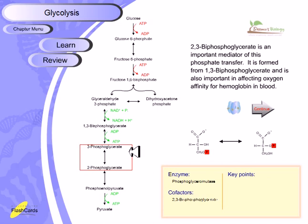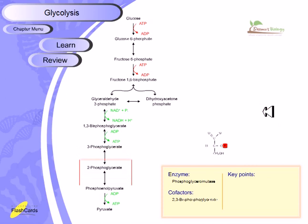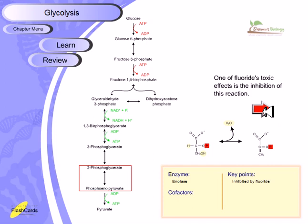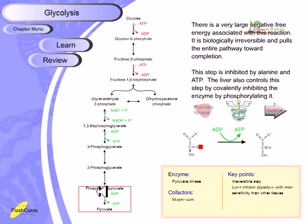Continuing the summary: Step 7 — phosphoglyceromutase converts 3-phosphoglycerate to 2-phosphoglycerate. Step 8 — enolase converts 2-phosphoglycerate to phosphoenolpyruvate (PEP) by releasing water. Step 9/10 — pyruvate kinase converts PEP to pyruvate, producing ATP by transferring the phosphate group from PEP to ADP. These are all the steps of glycolysis. Thank you.